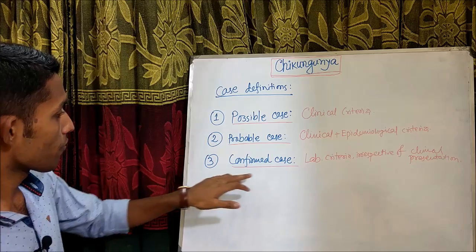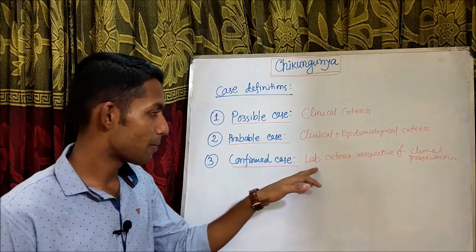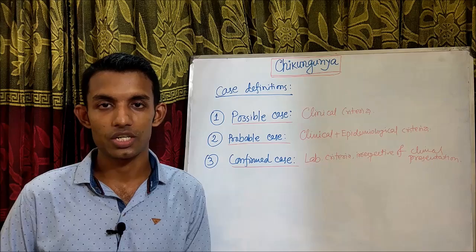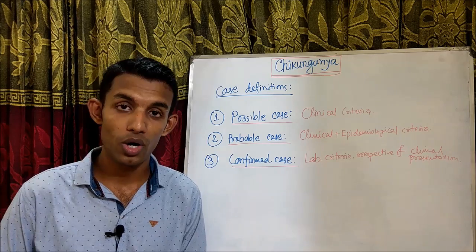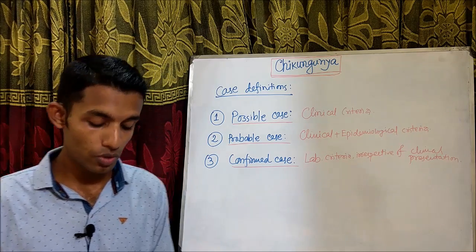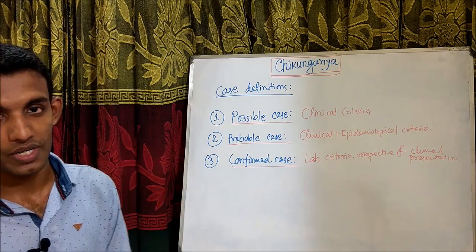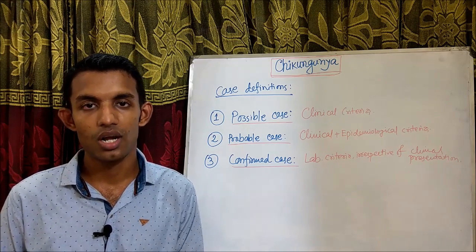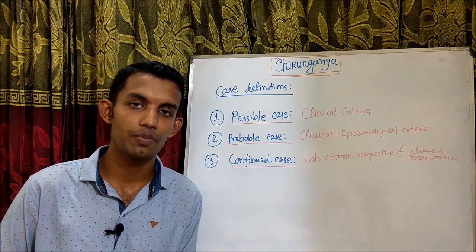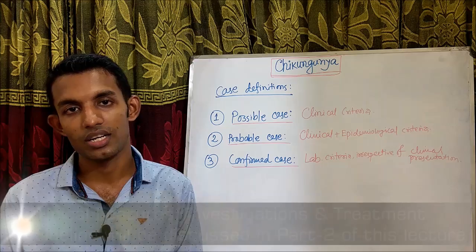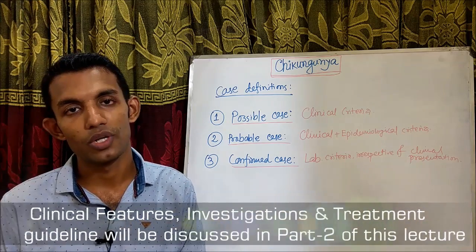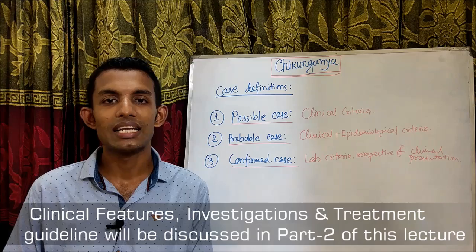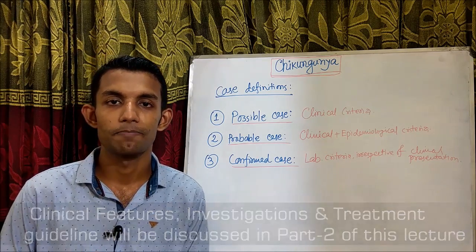A confirmed case is defined by laboratory criteria, irrespective of clinical presentation. The laboratory criteria include isolation of the virus by cell culture, detection of RNA by reverse transcriptase PCR, and demonstration of a rising titer of immunoglobulin G antibody in laboratory samples. Now, we move on to the clinical features of Chikungunya.